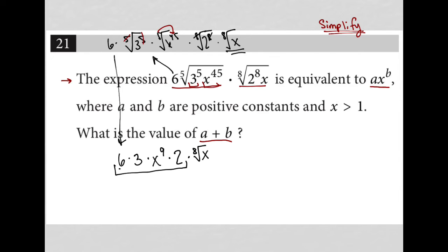Let's simplify all of this. I have 6 times 3, which is 18, times 2, which is 36. I have 36.